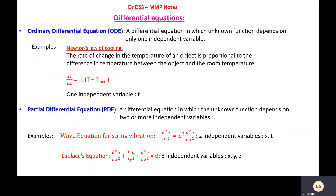There are two important types of differential equations, namely ordinary differential equations and partial differential equations. In an ordinary differential equation, there is only one independent variable. The example just seen had only one independent variable, x, so it was an example of an ordinary differential equation.